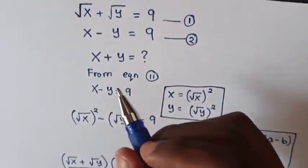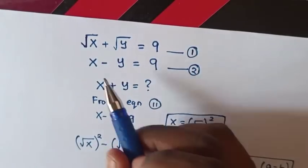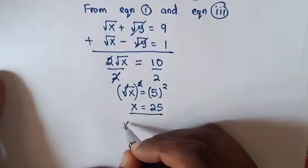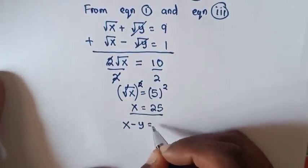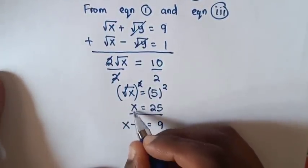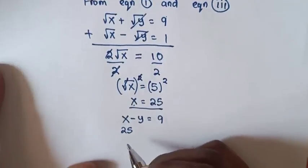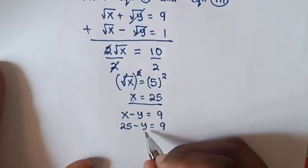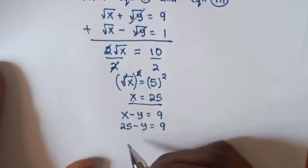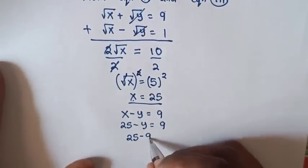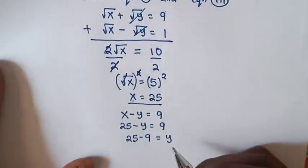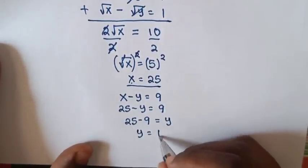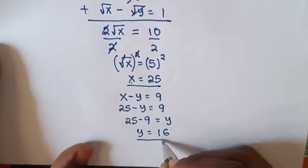To find the value of y, from equation 2, x minus y equals 9. Substituting x equals 25, we get 25 minus y equals 9. Rearranging, y equals 25 minus 9, so y equals 16.